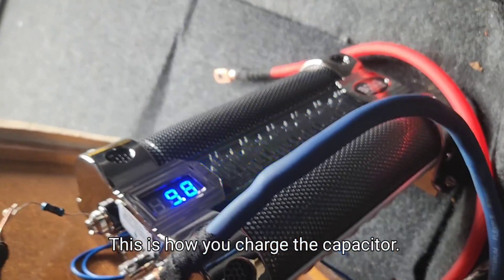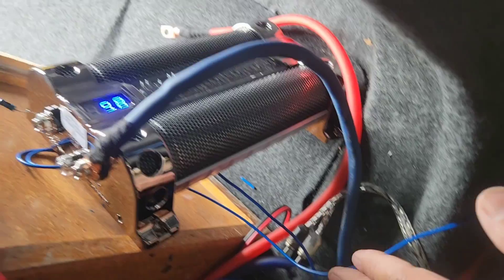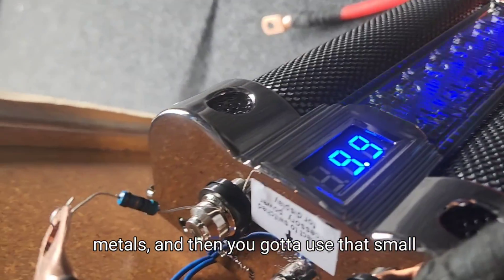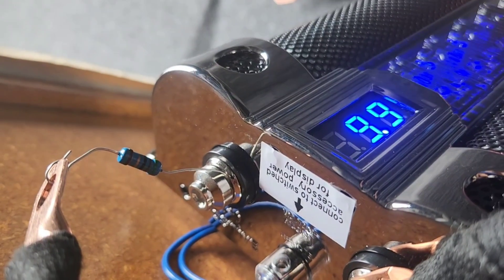This is how you charge the capacitor. So you've got to put the ground to the chassis frame, metals, and then you've got to use that small resistor.